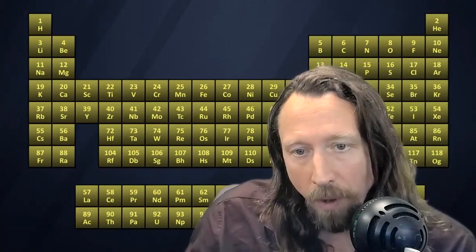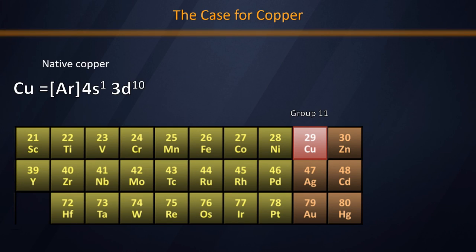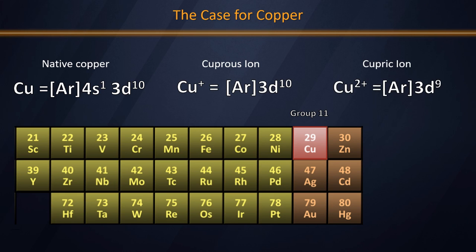Copper can form multiple ions. It's known to have various valence states. For example, there's the so-called cuprous ion, copper plus 1, and the cupric ion, copper plus 2. As you can see here, in order to form the copper 2 plus ion, we have to take an electron from that D subshell, which means that copper does in fact meet the IUPAC definition of a transition element.